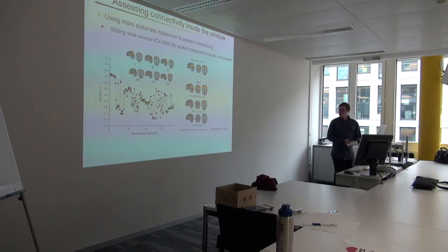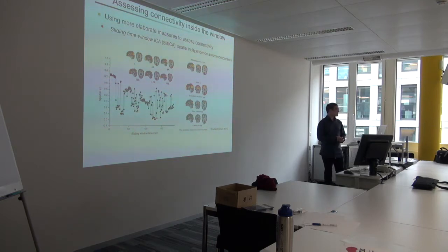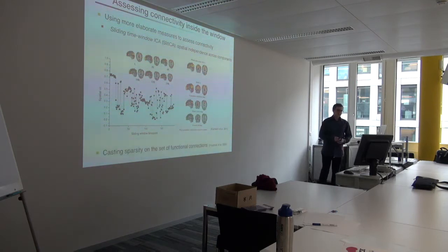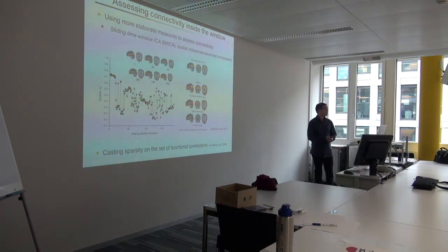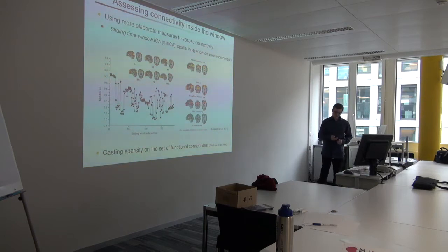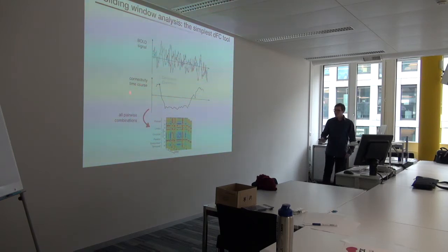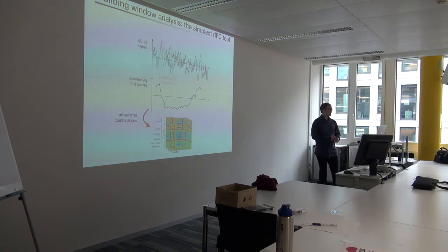Another option is to look at your connectivity matrices and assume that only a restricted set of connections will be non-zero — in other words, casting sparsity on your set of functional connections to simplify the problem. With these enhancements covered, we can also act at the level of the computed features, since the information is very complex and you may want to summarize it. The first way to do so is dynamic graph analysis.